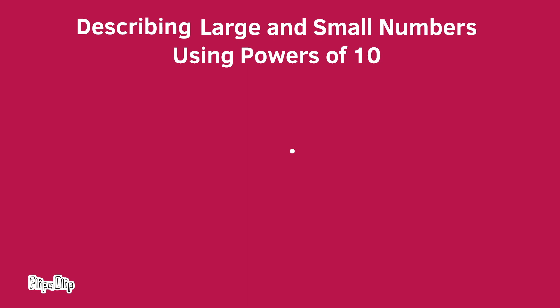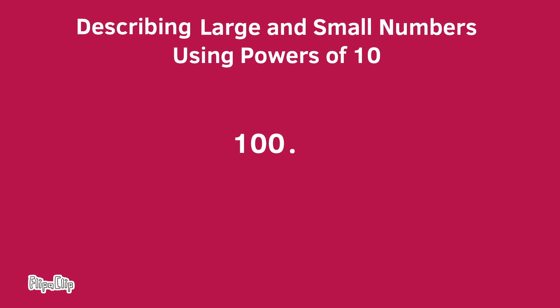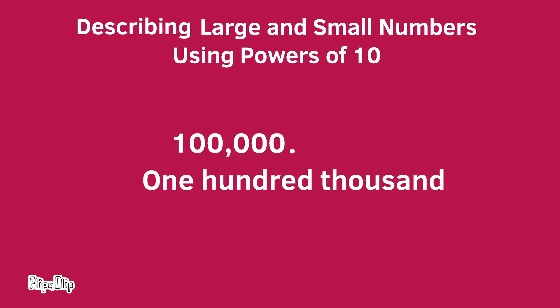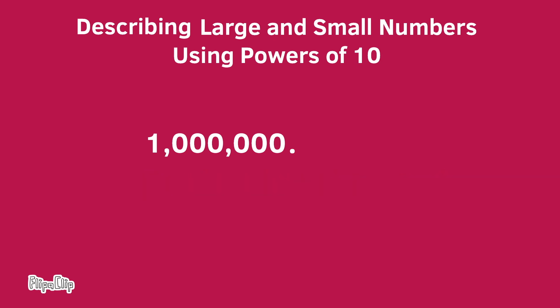We'll start with a 1 in the place value just to the left of the decimal point and watch the pattern: 1, 10, 100, 1,000, 10,000, 100,000, 1,000,000.